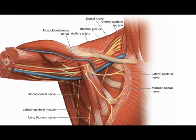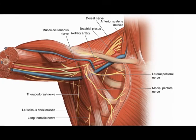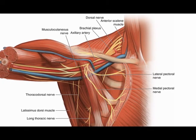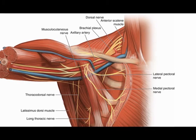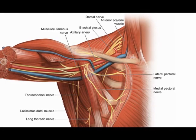And for the sternocostal head, it is the medial pectoral nerve from vertebral levels C6, C7, C8, and T1.